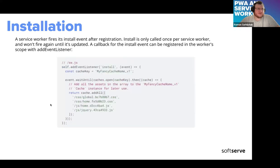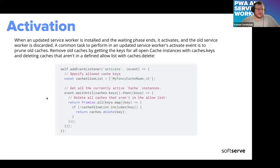After registration comes installation. The service worker fires the install event after registration. Install fires only once per service worker and won't fire again until it's updated. During this step you can add an event listener on the install event — it's a good place to cache all of your static assets. After installation comes activation: when an updated service worker is installed and the waiting phase ends, it's activated and the old service worker is discarded.